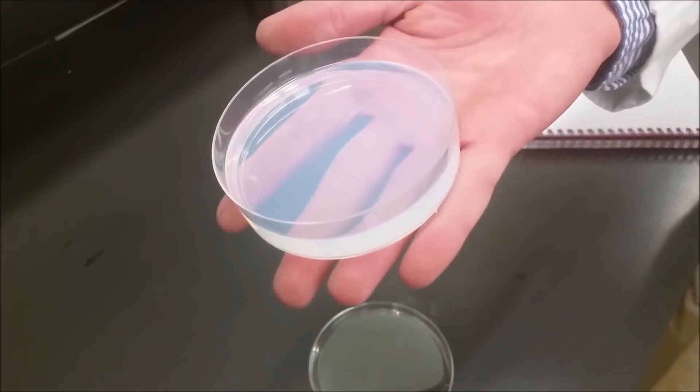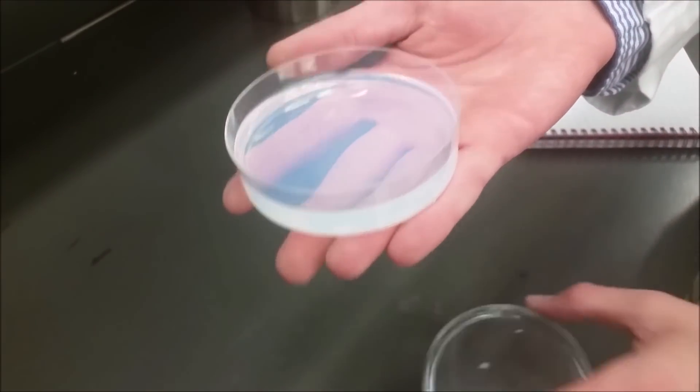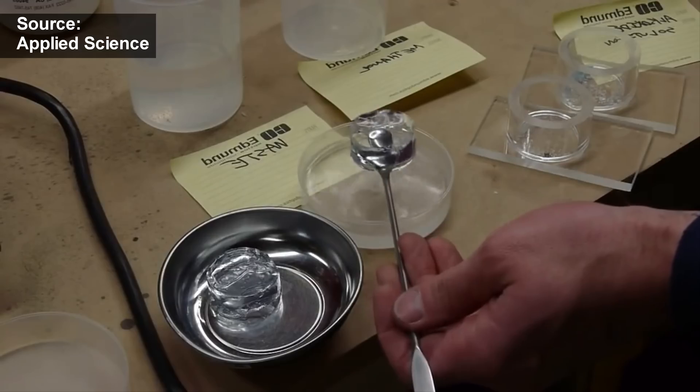It's quite easy to make aerogel. First, regular silica gel has to be made, for instance, by mixing together tetraethyl orthosilicate and ammonia solutions in methanol medium.